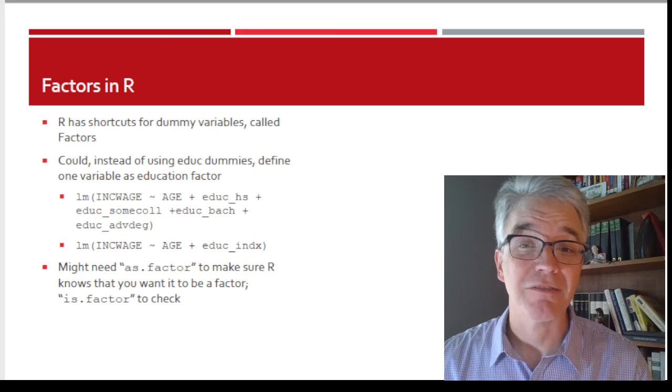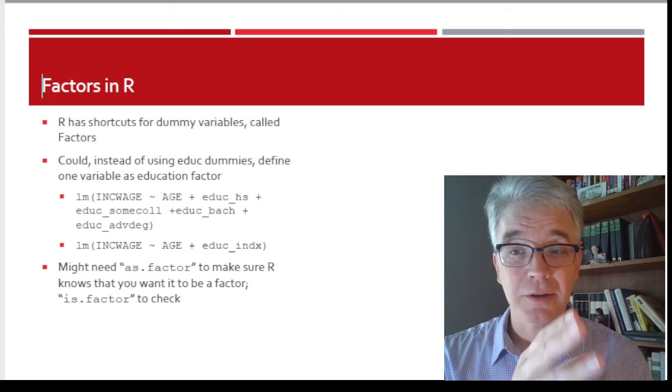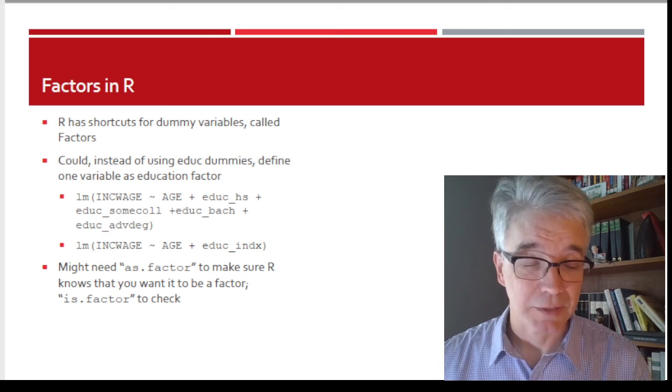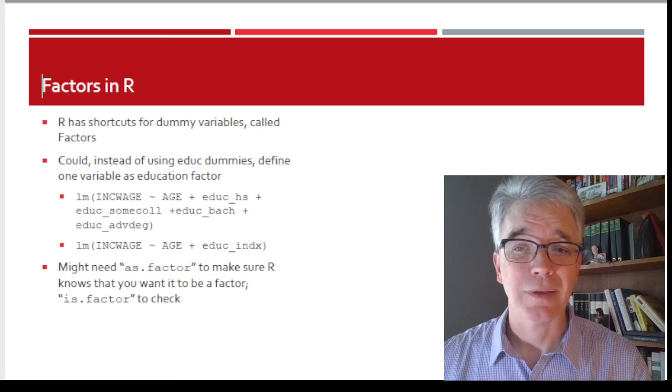If you tell it, on the other hand, oh, this is a factor, this is not like a regular number, this is a factor, then it will say, okay, I will basically, what it's doing in the background is it's going to split the education factor into each of those individual dummy variables, and it's going to estimate each of those individual dummy variables separately, which, again, allows those coefficients to be different.